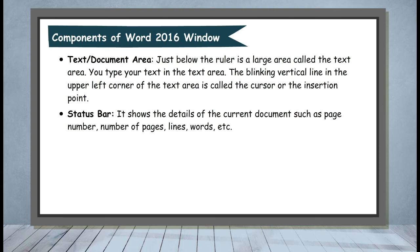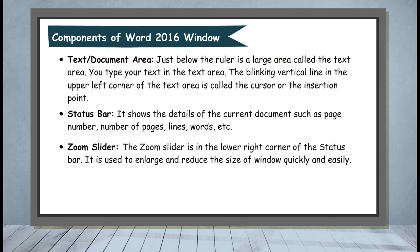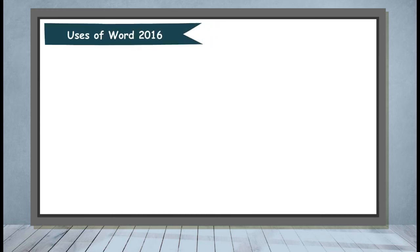Status Bar. It shows the details of the current document such as page number, number of pages, lines, words, etc. Zoom Slider. The zoom slider is in the lower right corner of the status bar. It is used to enlarge and reduce the size of the window quickly and easily.